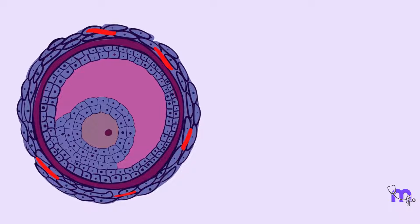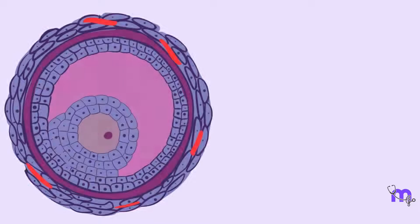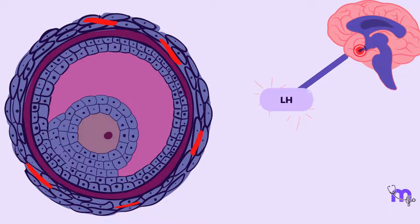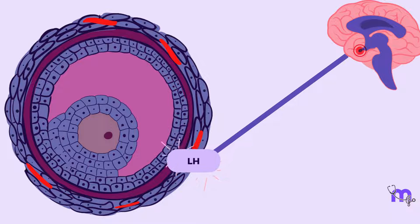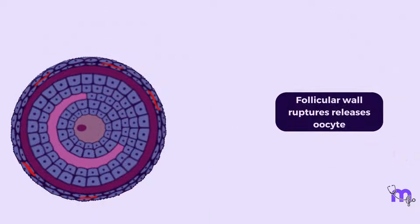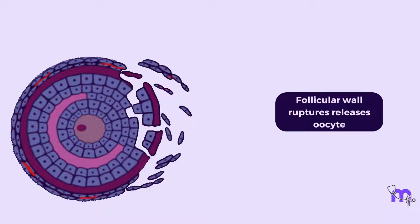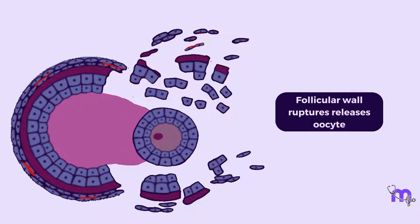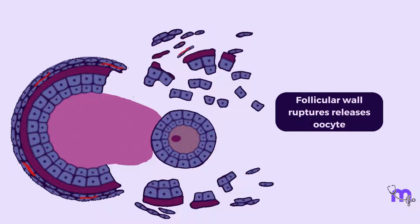When the dominant follicle reaches its maximum size, it receives a surge of luteinizing hormone from the pituitary gland, triggering the final stages of ovulation. The follicular wall weakens and ruptures, releasing the mature oocyte into the pelvic cavity.